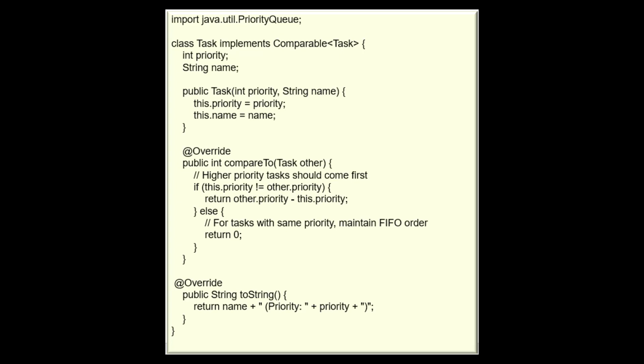This will indicate that the instances of a Task class can be compared to each other using the natural ordering defined by the class itself. First we'll declare a new class named Task. The line that says implements Comparable<Task> indicates that the Task class implements the Comparable interface with Task as the type parameter. The Comparable interface is used to define a natural ordering for the objects of a class. By implementing Comparable, the Task class specifies how instances of Task can be compared to each other for the purpose of ordering.